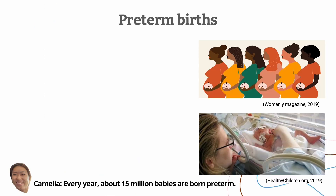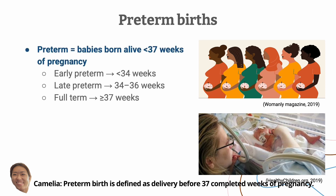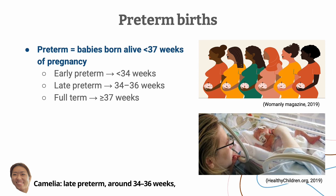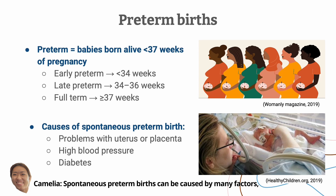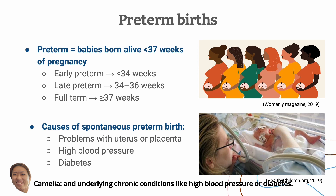Every year, about 15 million babies are born preterm. Preterm birth is defined as delivery before 37 completed weeks of pregnancy. This can be classified as preterm, which is less than 34 weeks, late preterm, around 34 to 36 weeks, and term births, which is 37 weeks or more. Spontaneous preterm births can be caused by many factors, including problems with the uterus or placenta, and underlying chronic conditions like high blood pressure or diabetes.